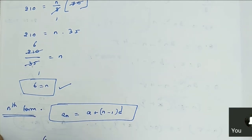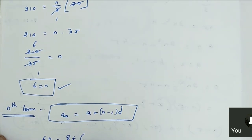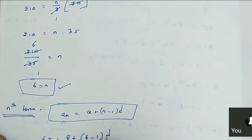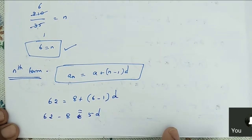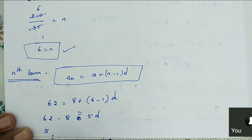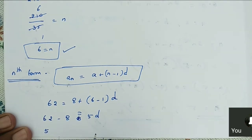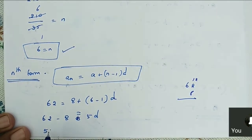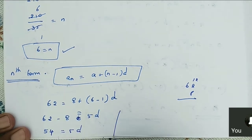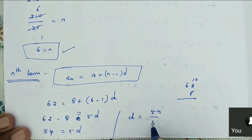In this, A_N is 62 and A value is 8, plus N minus 1, that is 6 minus 1, into D value. So 62 is equal to 8 plus 5D. Then 62 minus 8 equals 5D. 62 minus 8 is 54. So 54 equals 5D. Then D is equal to 54 by 5.